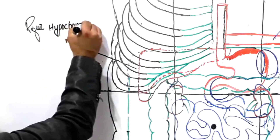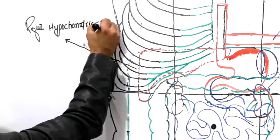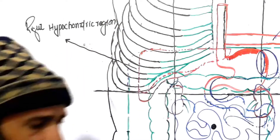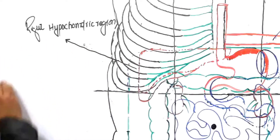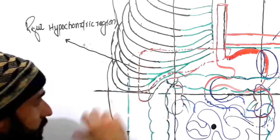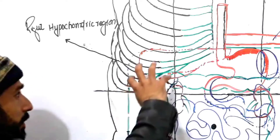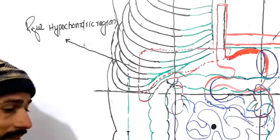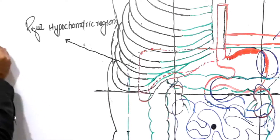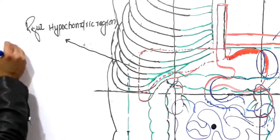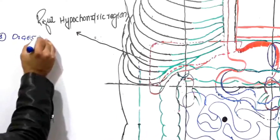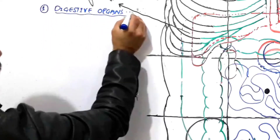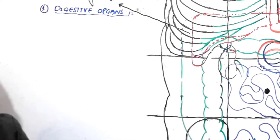Now, what organs are present in the right hypochondric region? I will divide these organs into groups: digestive organs, excretory organs, and endocrine organs. The first group are the digestive organs — so which digestive organs are found in the right hypochondric region?